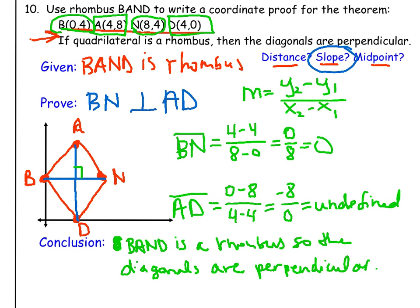...BAND is a rhombus, so the diagonals are perpendicular. And we've proven that using the slope formula here to show that we have opposite reciprocal slopes, which means we have perpendicular segments.